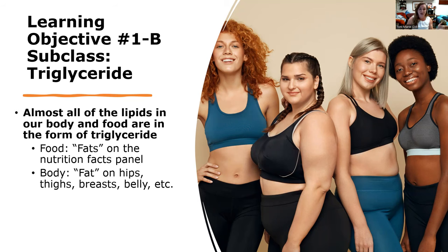We have healthy stores of body fat that we use during times of need, or to help us through reproduction or extreme circumstances like illness or injury. The lipid most pronounced in our body is also the triglyceride. We have fat — triglycerides — on our hips, thighs, breasts, belly, and so on. Our bodies store them in different locations depending upon a variety of factors.